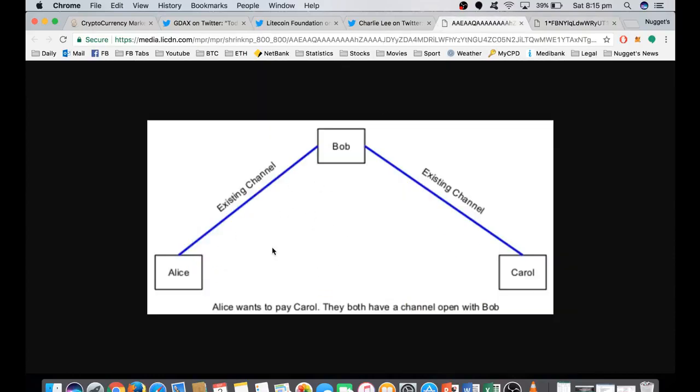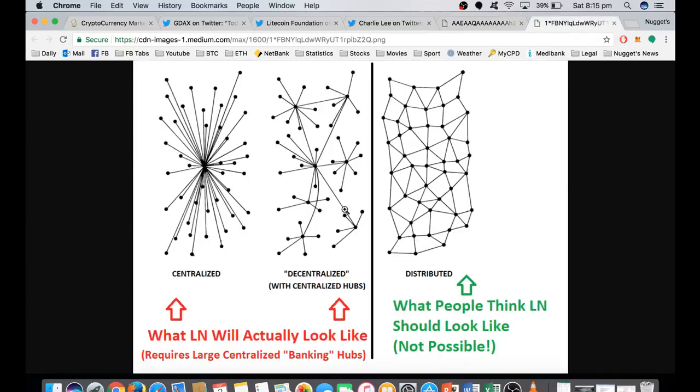But because you do have to lock up or deposit some cryptocurrency for this to be possible, it's most likely that we're going to see some degree of centralization with larger amounts being locked up in a centralized hub as it's shown here. And the degree to which that centralization is going to occur remains to be seen. But it's probably not going to be as efficient as a lot of people might be imagining.